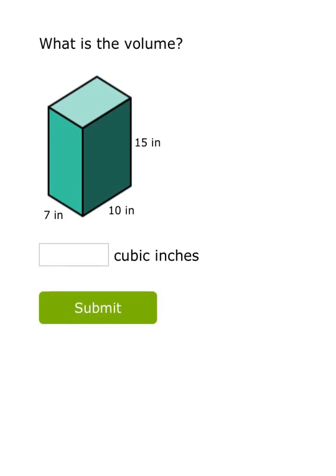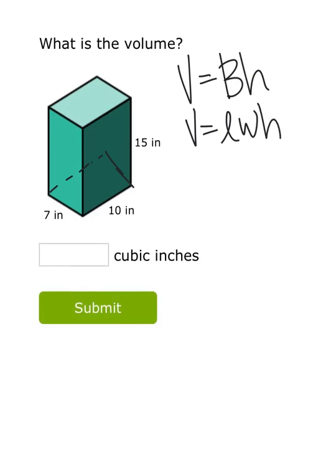Moving on to a prism, it's the same thing. The volume is the area of the base times the height. I know the base shape of this prism is a rectangle, and I could find the area of a rectangle by length times width. So once again, we're going to use length times width times height to find the volume of this prism.